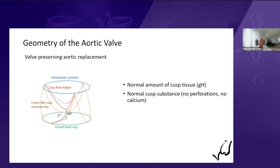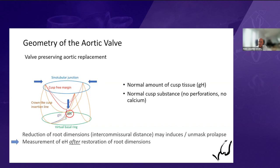In valve-preserving aortic replacement, the sinotubular junction will be reduced, leading to a reduction of effective height — simply because you bring the two commissures closer together and the center of the cusp margin will hang down. Reduction of root dimensions, that is inter-commissural distance, may induce or unmask prolapse. If the root is dilated and we reduce or interfere with the sinotubular junction as part of the operation, we must check effective height after restoration of root dimensions.